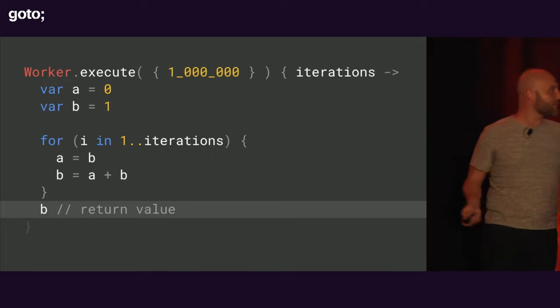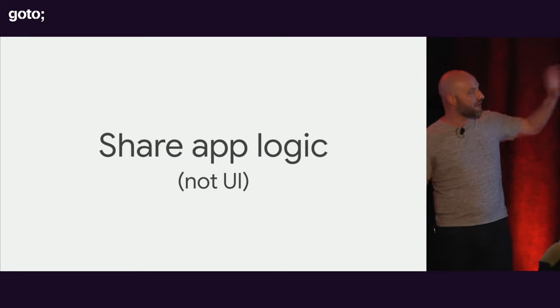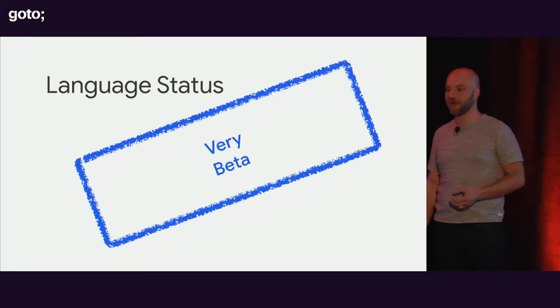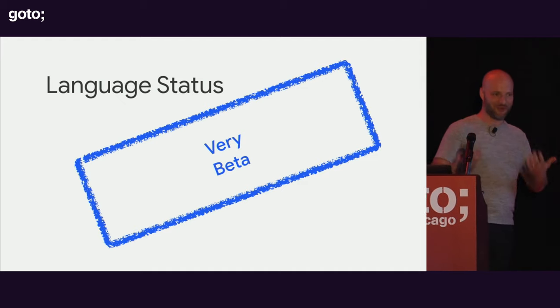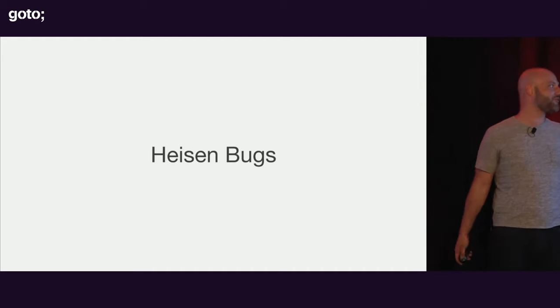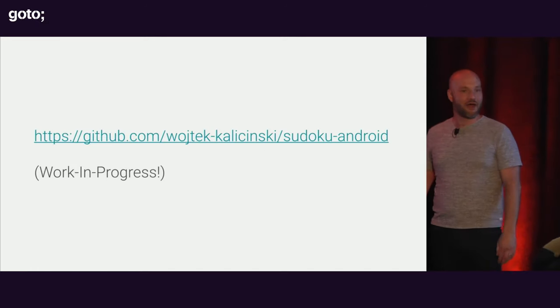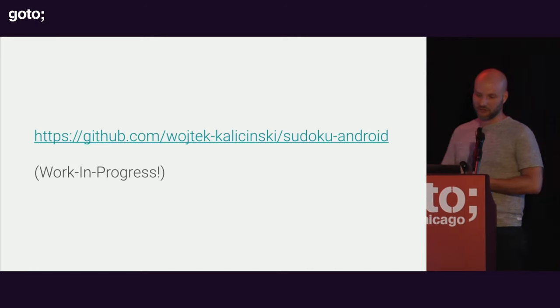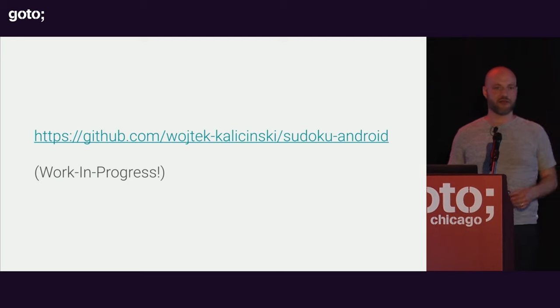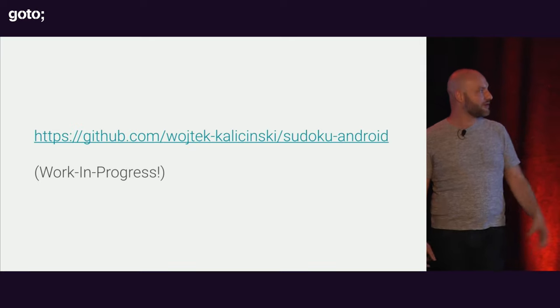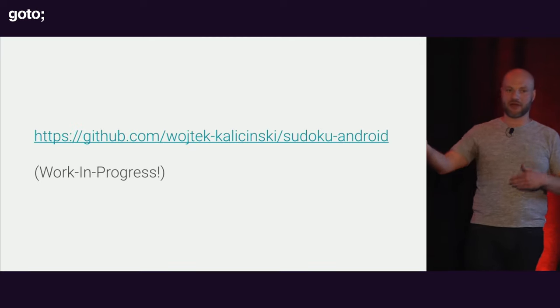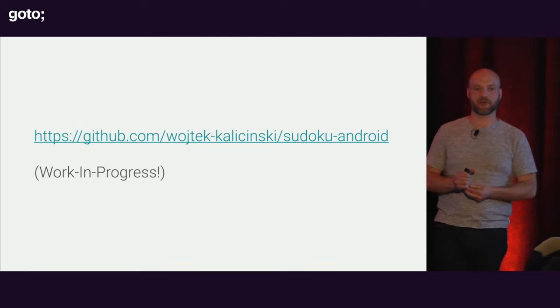So the core concepts of Kotlin Multiplatform: it allows you to share app logic and not the UI; it's currently very beta — check it out Q1 next year unless you want to get involved very early; and it helps fix Heisen bugs with safe threading. If you want to take a look at that Sudoku application, that's a real sample project my coworker Wojtek put together that shows what a cross-platform iOS and Android project might look like. Thank you so much for your time, and I'll be around after if you have any questions.